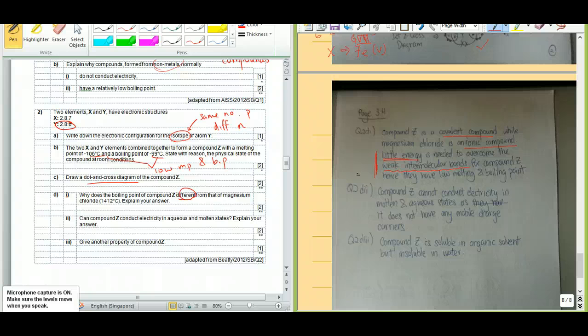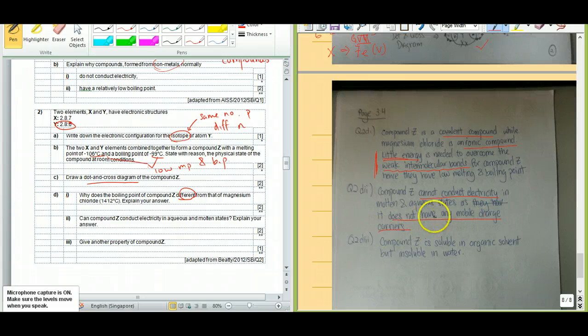What about part 2? As we know, Z is already a covalent compound. So we definitely know that Z cannot conduct electricity in molten and aqueous state. But what's the reason? It's because it does not have any mobile charge carriers. When talking about mobile charge carriers, referring to ions or electrons.